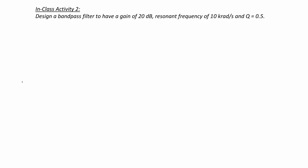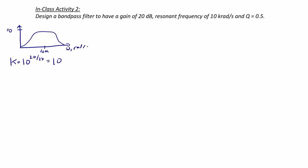In-class activity 2: design a band-pass filter with a gain of 20 dB, a resonant frequency of 10 kiloradians per second, and Q equal to 0.5. First, sketch the band-pass filter. A gain of 20 dB means k = 10^(20/20) = 10, so the maximum value is 10. The resonant frequency is 10 kiloradians per second.